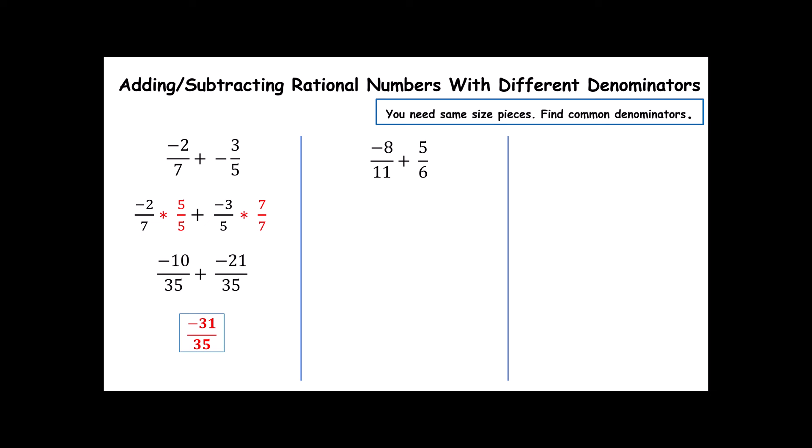Consider this. I have -8/11 plus 5/6. These are different size pieces. I need them to be same size pieces, so I need to split these into smaller pieces. The easiest way to do that is to take your -8/11 and multiply it by this 6 over itself. Remember, that's just a 1. It changes the way the fraction looks without changing its value. I can take this 5/6 and multiply by the opposite denominator, the 11/11. Again, I'm multiplying by a 1. Because if I do that, this becomes -48 over 66. This becomes 55 over 66. Now all I have to do is add the numerators. Not too bad, right?